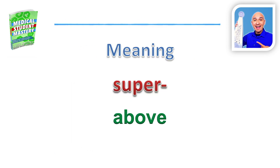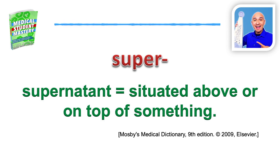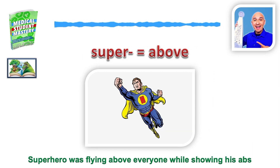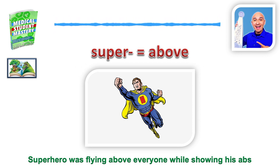The next one is super. Super means above. The word use is supernatant, which means situated above or on top of something. My story would be that the superhero was flying above everyone while showing his abs. The reason I threw in abs is because it helps us remember above — abs, above.